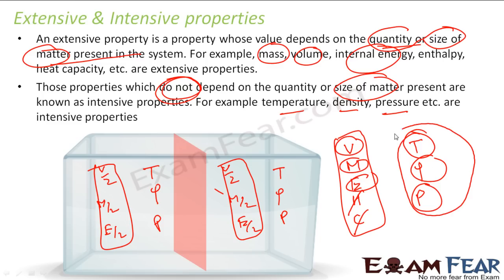But these properties, temperature, pressure, and density, these didn't change. The ones in the circle, they didn't change. They don't depend on the quantity. So here the key is quantity of matter.